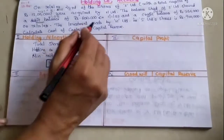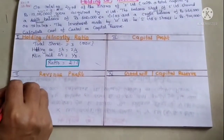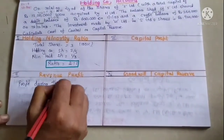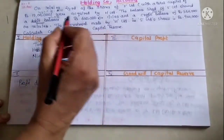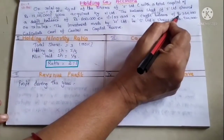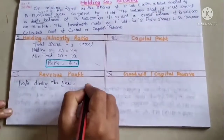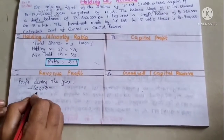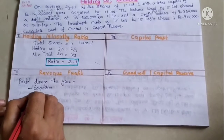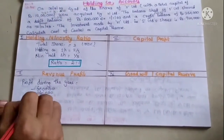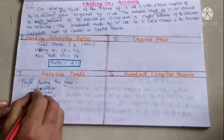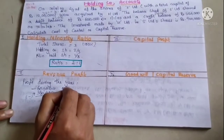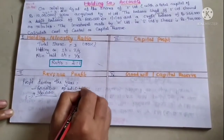Now we calculate the profit during the year. The profit is derived as closing balance minus opening balance. Opening balance is minus 6 lakh and closing balance is plus 3,60,000.